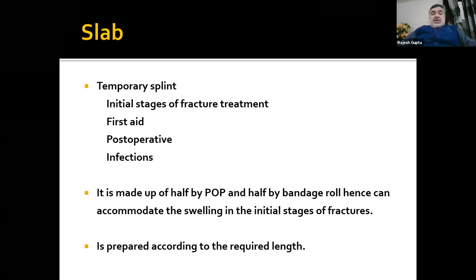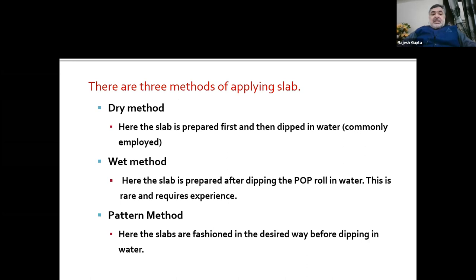A slab is a temporary splint used in the initial stages of fracture treatment. It is also used in first aid, postoperative period, and in infections to give rest to the part. It is made up of half POP and half bandage roll, hence can accommodate swelling in the initial stages of fracture. There are three methods of applying a slab: the dry method, where the slab is prepared first and then dipped in water — this is the commonly employed method; the wet method, where the slab is prepared after dipping the POP roll in water — this is rare and requires experience; and the pattern method, where slabs are fashioned in a desired way before dipping in water.